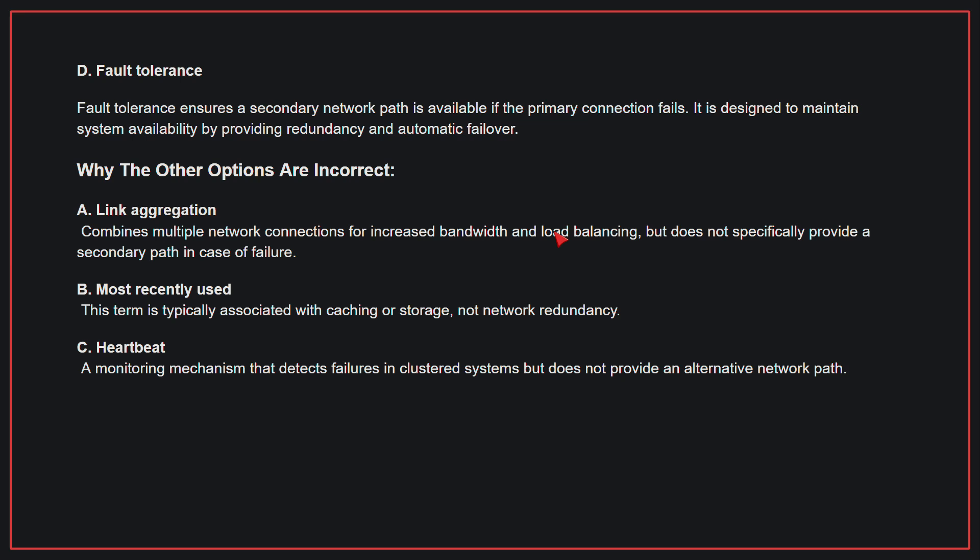B, most recently used: this term is typically associated with caching or storage, not network redundancy. C, heartbeat: this is a monitoring mechanism that detects failures in clustered systems, but does not provide an alternative network path. Therefore, the correct answer is D, fault tolerance.